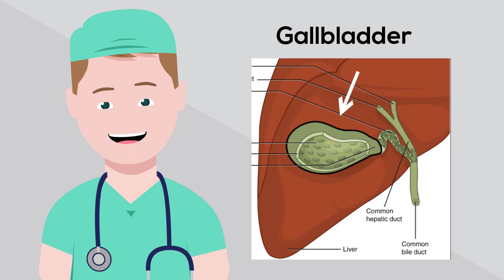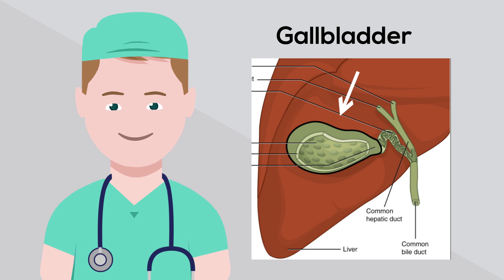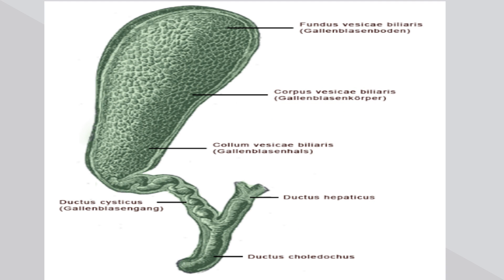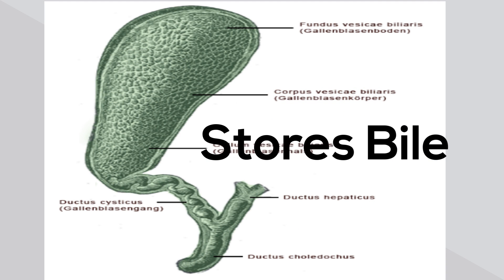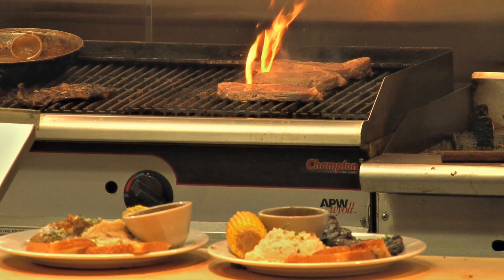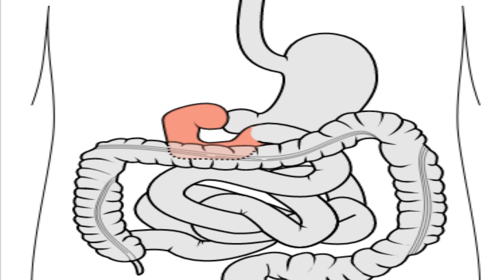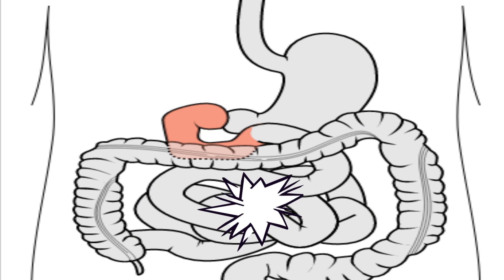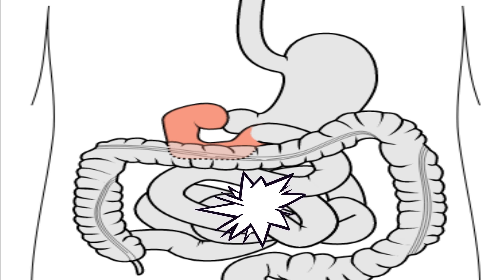The gallbladder in humans is pear shaped and is found beneath the liver. The gallbladder stores bile which is created in the liver. Bile is important for the digestion of food. Fats in your small intestine like to stick together and form clumps of fat. The bile breaks these clumps apart, which helps make the job of the enzymes in the small intestine easier.